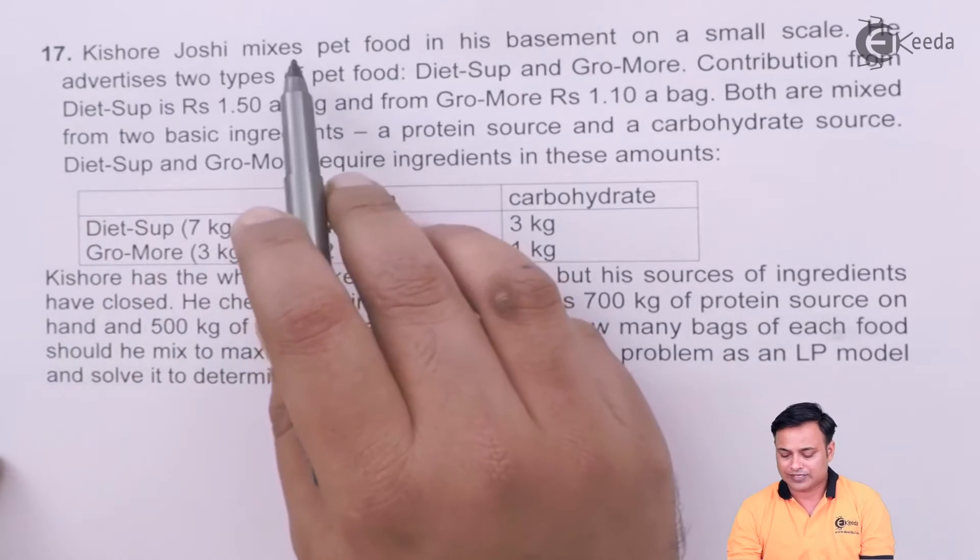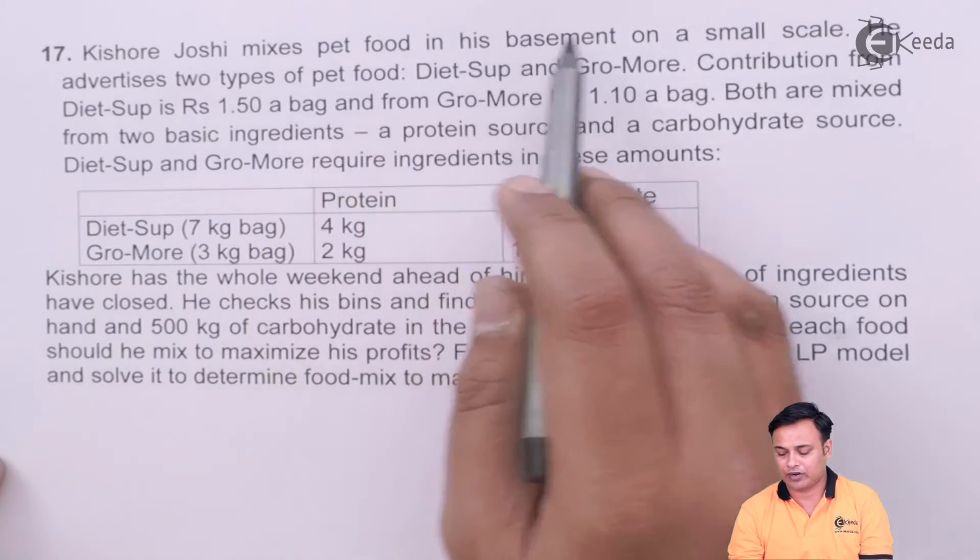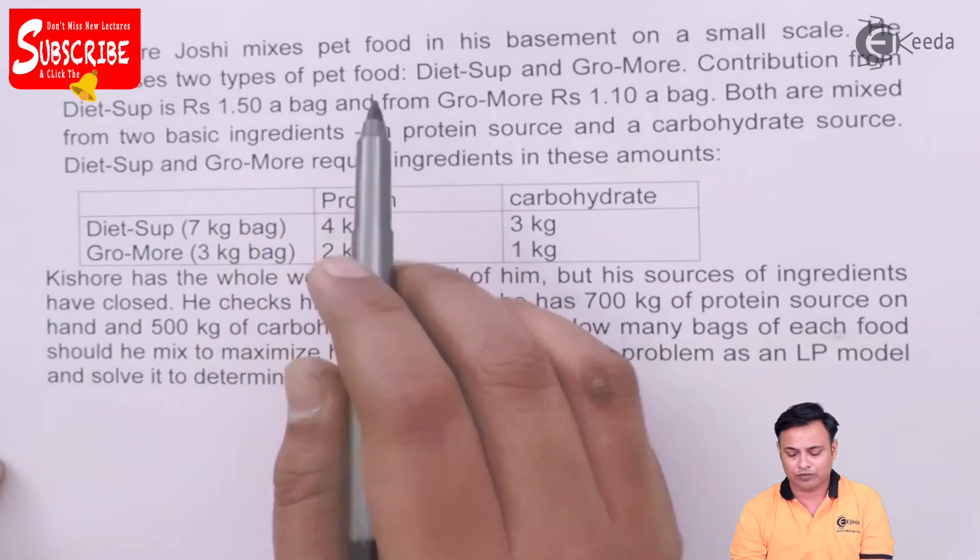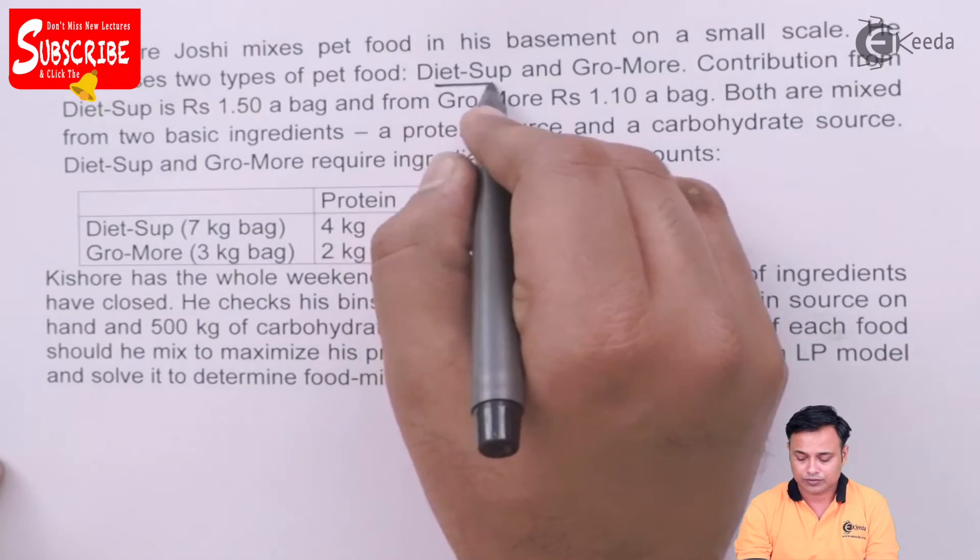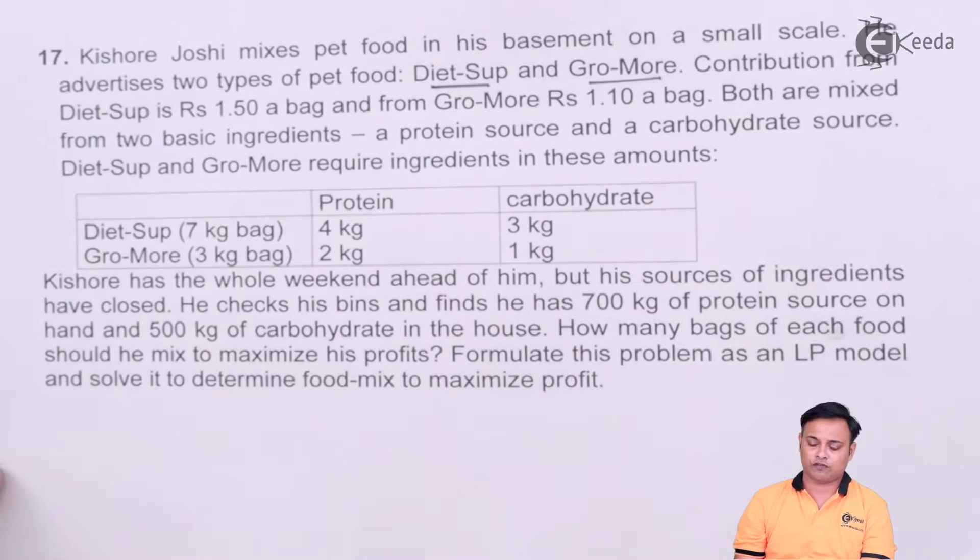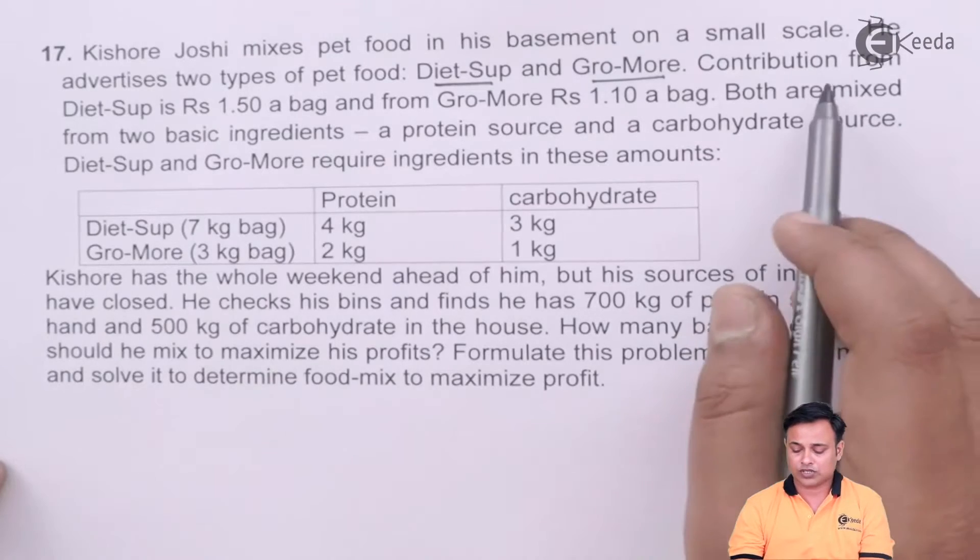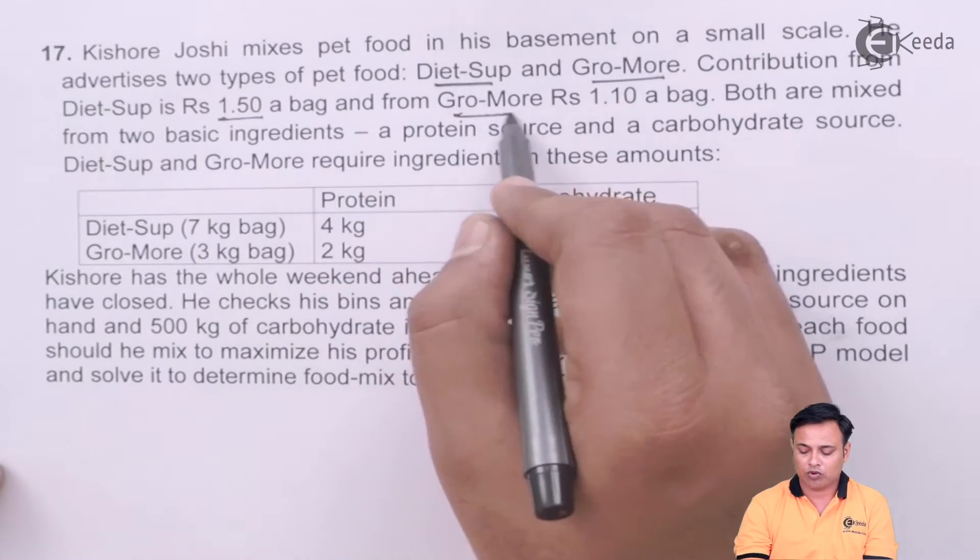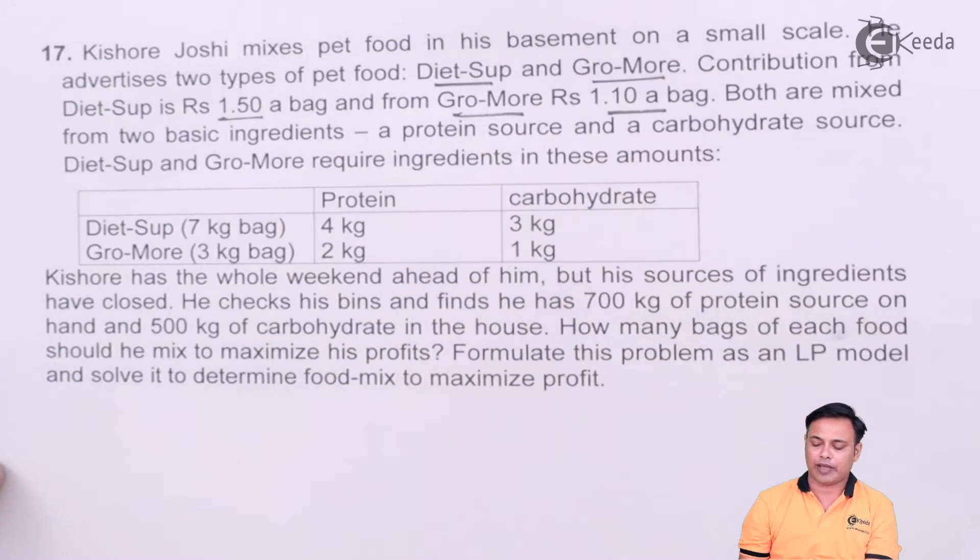Kishore Joshi mixes pet food in his basement on a small scale. He advertises two types of pet food, one is Diet-Sup and one is Gro-More. There are two types of food mix. Contribution from Diet-Sup is $1.50 per pack and for Gro-More it is $1.10 per bag.